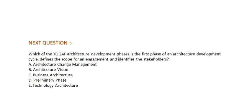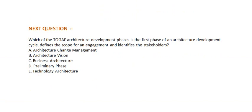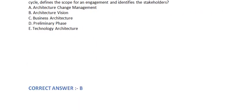Next question: Which of the TOGAF architecture development phases is the first phase of an architecture development cycle, defines the scope for an engagement and identifies the stakeholders? Option A: Architecture Change Management. Option B: Architecture Vision. Option C: Business Architecture. Option D: Preliminary Phase. Option E: Technology Architecture. The correct answer is Option B.